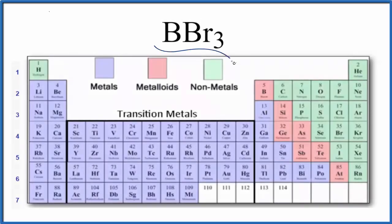Let's take a look at whether BBr3, that's boron tribromide, is ionic or covalent. Boron on the periodic table is a metalloid and bromine is a nonmetal. We have a metalloid and a nonmetal, so we are thinking that this is going to be a covalent, also called a molecular, chemical bond.